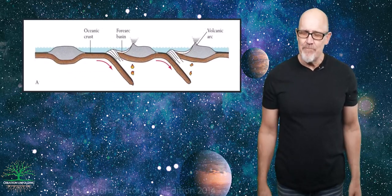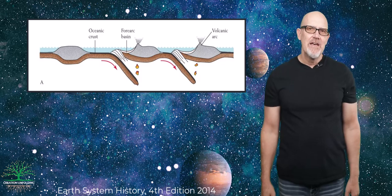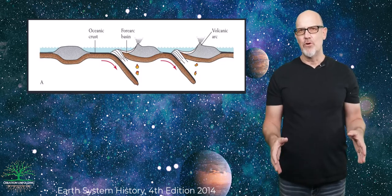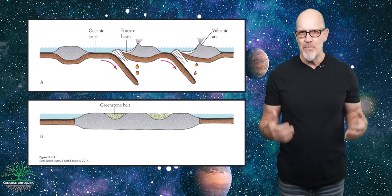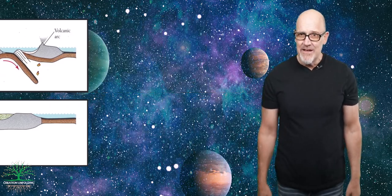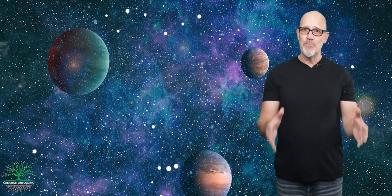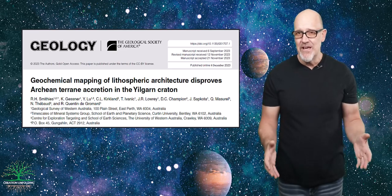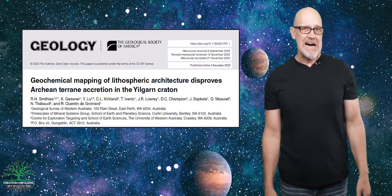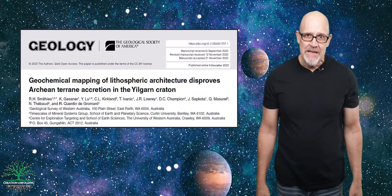From our last video, most scientists today believe our present continents formed through a process of accretion from much smaller terranes. I pointed out that one paper threw a spanner in the works by questioning the modern-style arc-to-terrain accretion model, but to keep things simple, I'll stick with the scientific consensus.